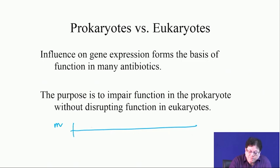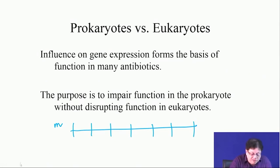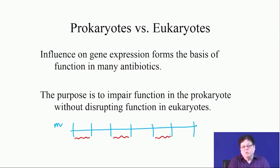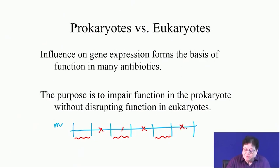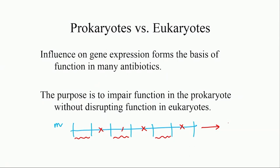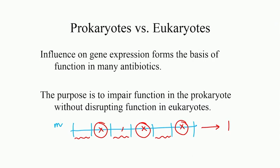Basically, in eukaryotes, the mRNA has different segments — some are functional segments that code for protein, and some are not. This junk portion which is not coding for any amino acid has to be removed, and then the pieces have to be stitched together again.